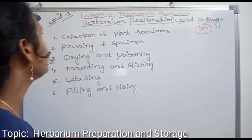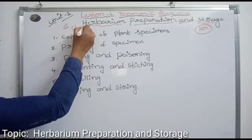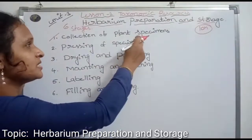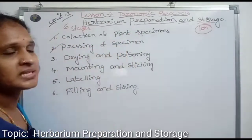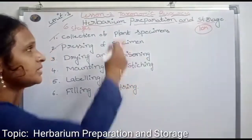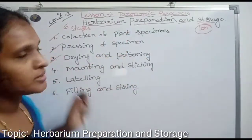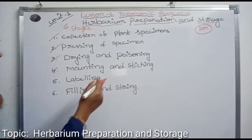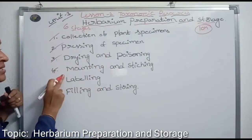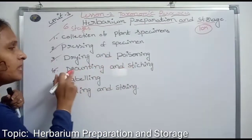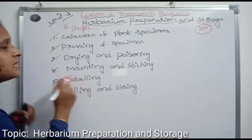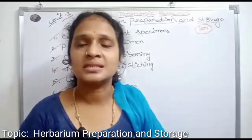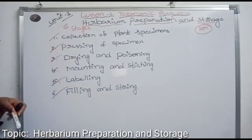Herbarium Preparation involves six steps: 1. Collection of plant specimens. 2. Pressing of specimens. 3. Drying and Poisoning. 4. Mounting and Stitching. 5. Labeling. 6. Filing and Storing.